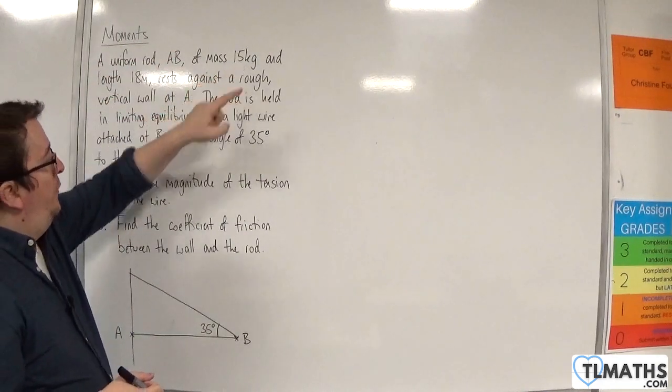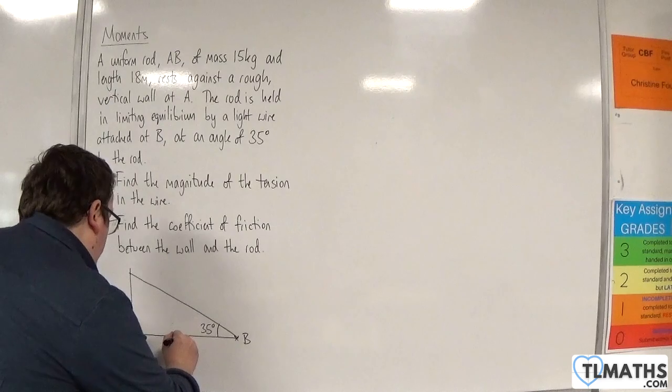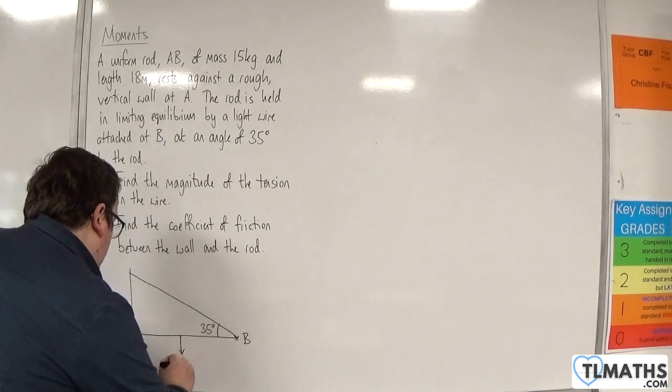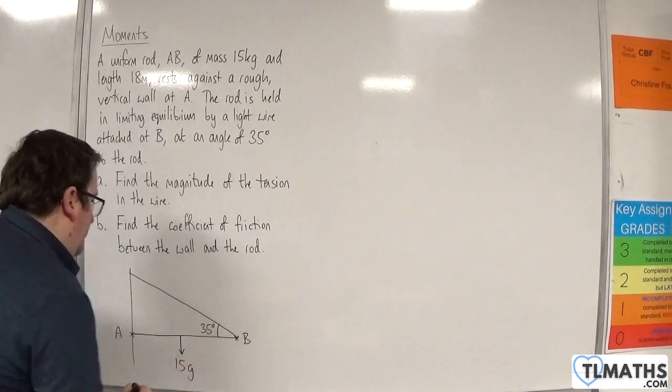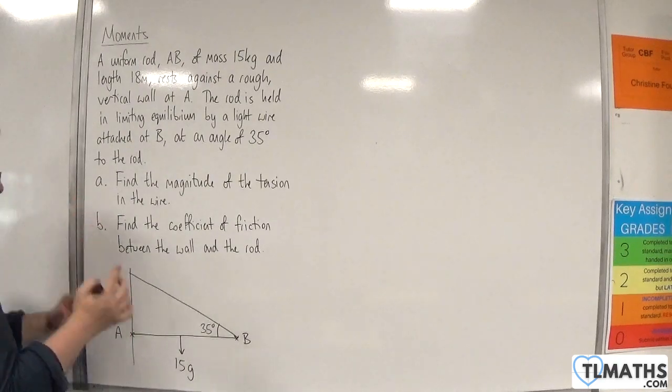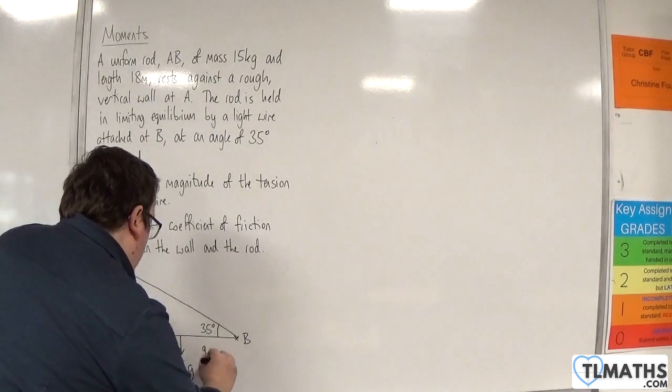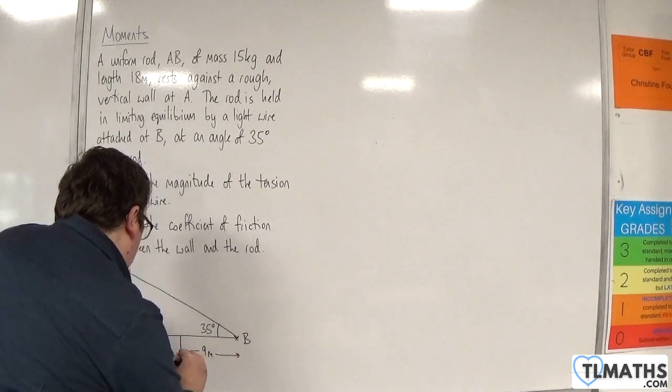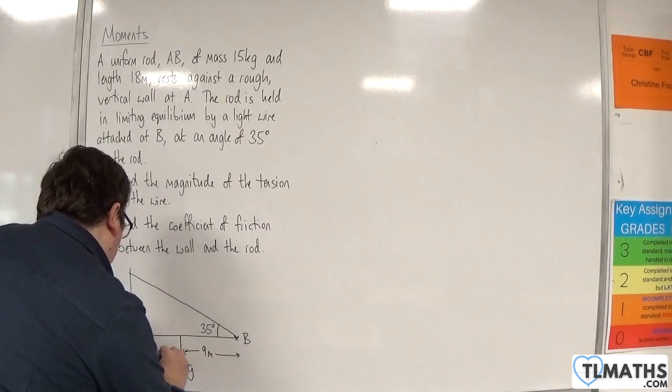The mass is 15 kilos, so I can identify its weight as 15g. The rod is 18 meters, so this distance must be 9 meters and that distance must be 9 meters.